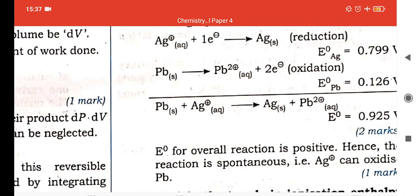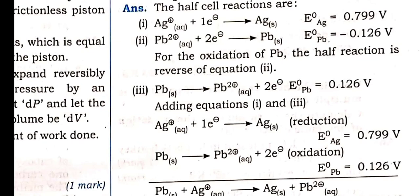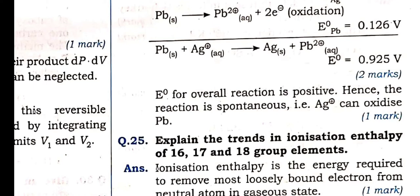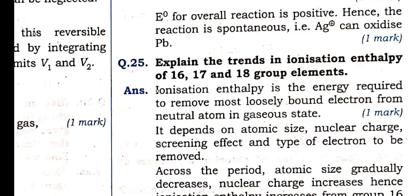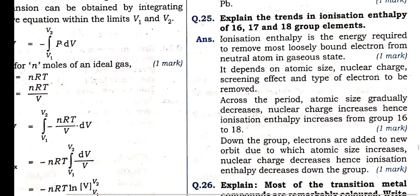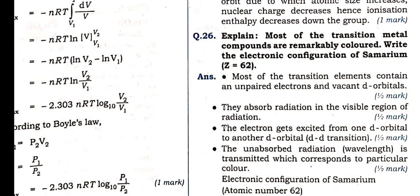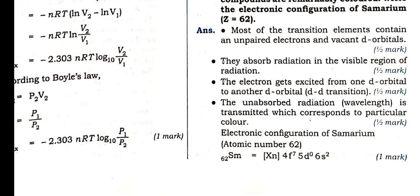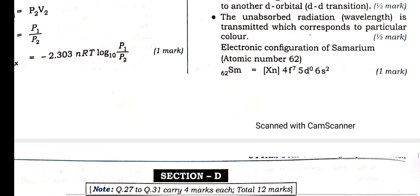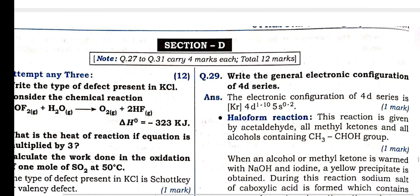Electrode reaction: we assume and go ahead with the reaction. If E°cell is positive then the reaction is spontaneous. If E°cell is negative then the reaction is non-spontaneous. Trend of ionization enthalpy of group 16, 17, 18 — just learn it by heart. Most transition metal compounds are remarkably colored because of the presence of d-d transition, d-block element d-electrons. Electronic configuration for samarium — atomic number 62 — write the electronic configuration according to Aufbau principle.